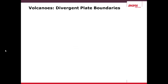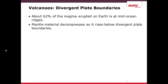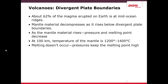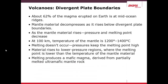Volcanoes can happen at divergent plate boundaries — approximately 62% of all magma erupted on Earth comes through a mid-ocean ridge at a divergent plate. This is where the mantle decompresses as magma rises from the divergent plate. As the two plates diverge, the material rises and pressure decreases, lowering the melting point. At approximately 100 kilometers depth, the mantle temperature is about 1,200°C, but melting doesn't occur because of the high pressure. As it rises to lower pressure regions, the melting point decreases and partial melting occurs, producing mafic magma from partially melted ultramafic mantle rock.